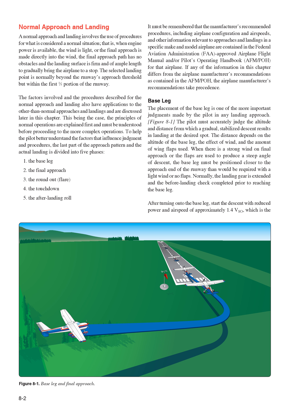Normal Approach and Landing. A normal approach and landing involves procedures for what is considered a normal situation: engine power is available, the wind is light or the final approach is made directly into the wind, the final approach path has no obstacles, and the landing surface is firm and of ample length. The selected landing point is normally beyond the runway's approach threshold but within the first one-third portion of the runway. The principles of normal operations are explained first and must be understood before proceeding to more complex operations.